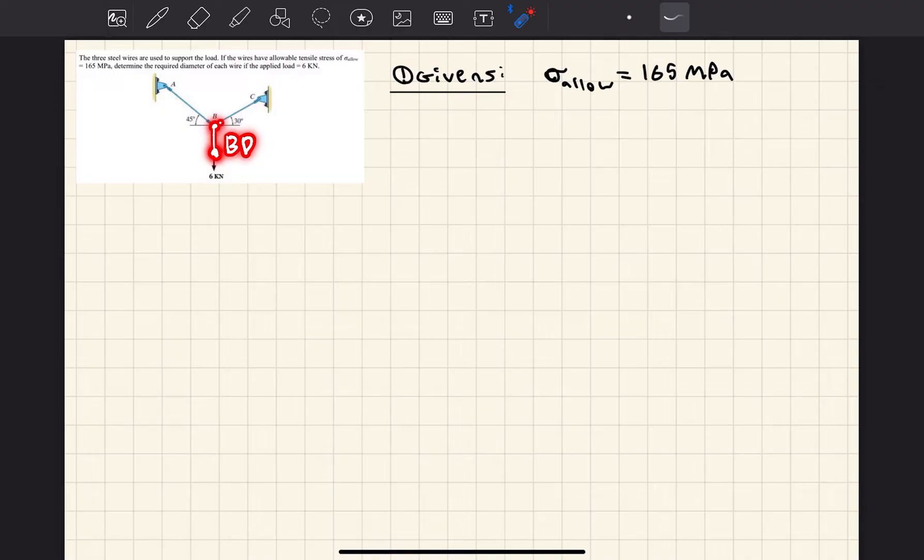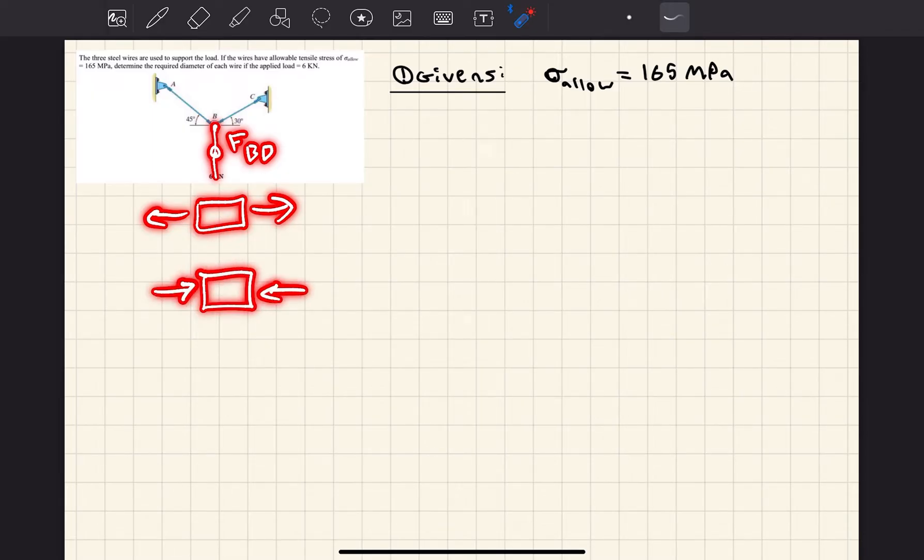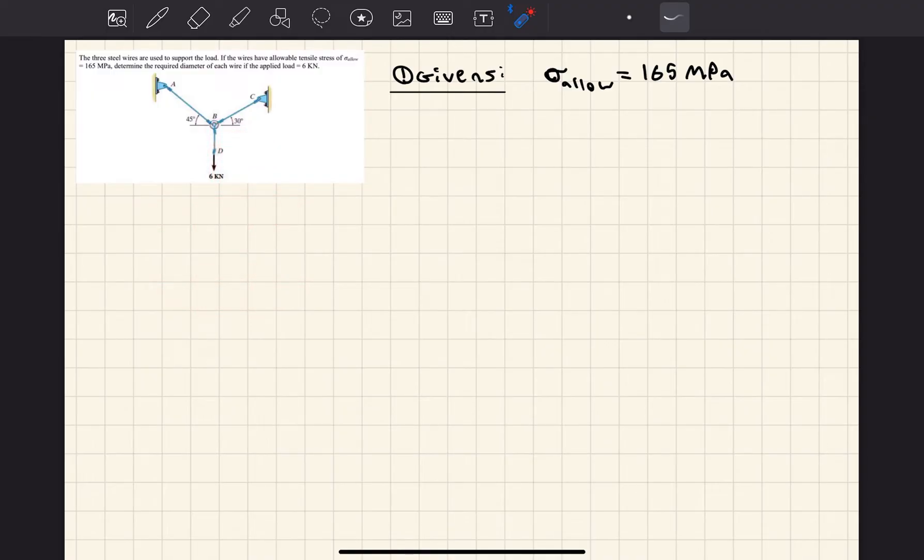We're going to call this wire wire BD, this wire right here wire BC, and this one is wire AB. I'm going to refer to that notation throughout this question. The tensile force in wire BD is 6 kN, so FBD is equal to 6 kN.